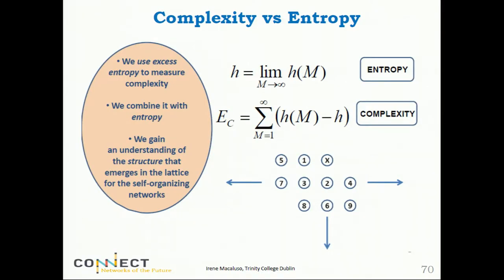We also studied complexity and entropy quantities. For a target cell x, the entropy is computed by averaging over all possible conditional entropies. Conditional entropy means checking a neighborhood and seeing what is the probability of x having a certain channel value given that the neighbors have a certain configuration.